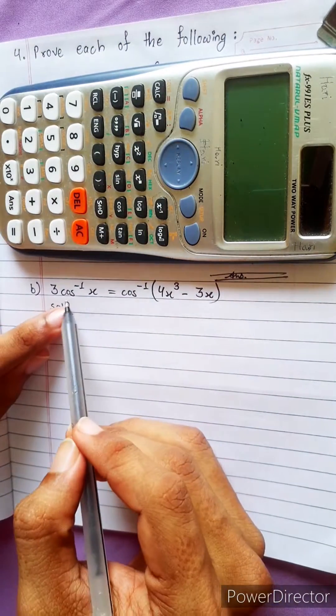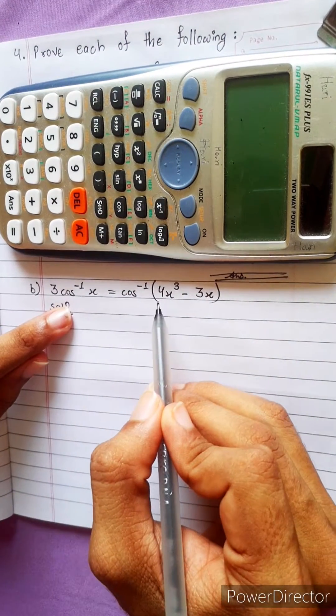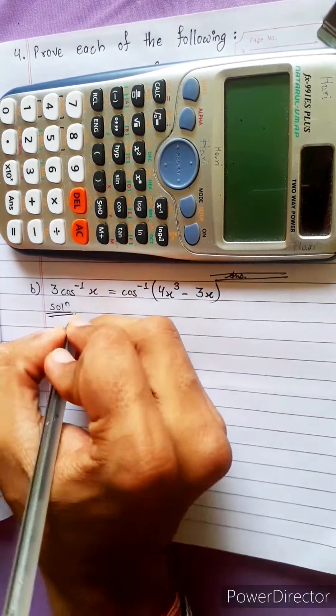Prove each of the following: 3 cos inverse x equals to cos inverse of 4x cube minus 3x. OK, let's go to the inverse.